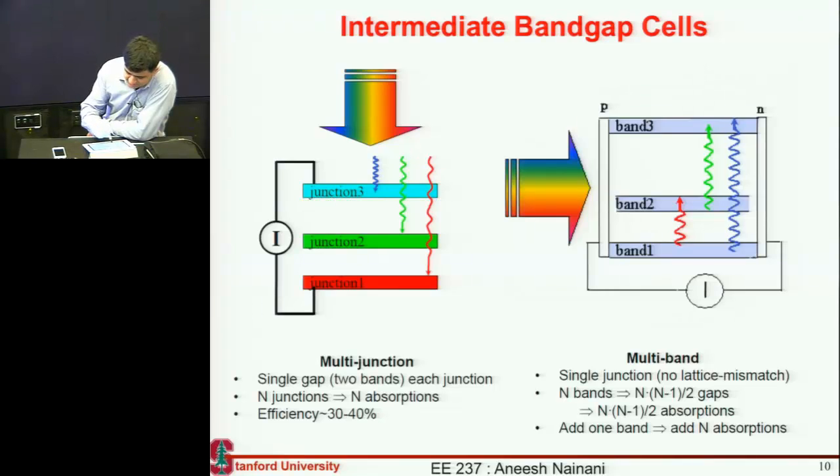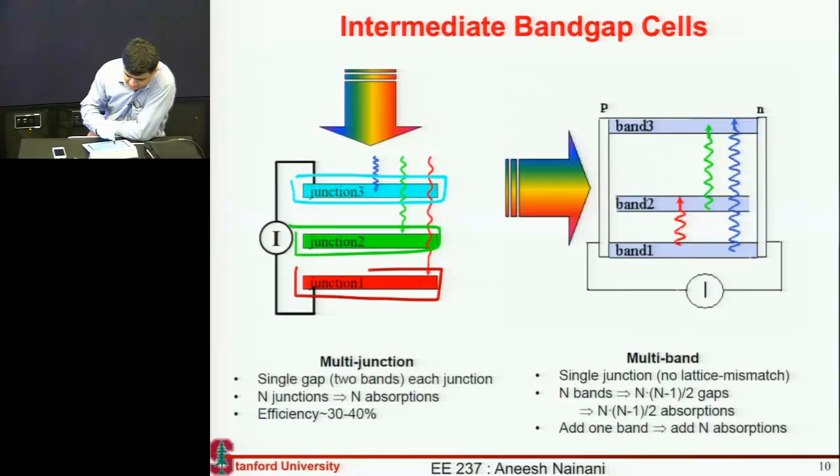Most of the high efficiency cells that we discussed were formed by this multi-junction approach where you had one material for my blue photon, one material for my green photon, one material for my red photon, right? And I connected all of them in series. But now, what if I think of just one material and it has one bandgap, right? But if I could somehow engineer it so that it creates another band in between?